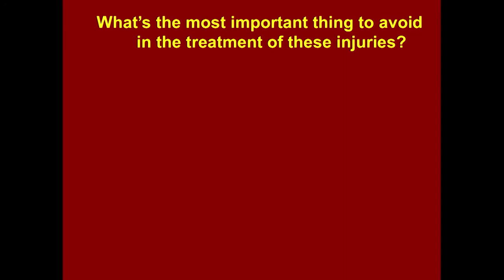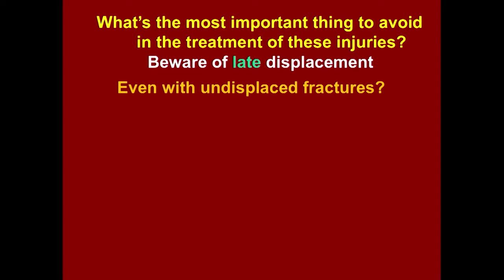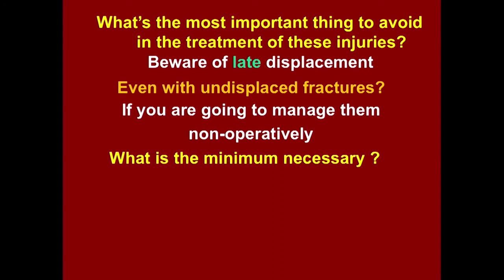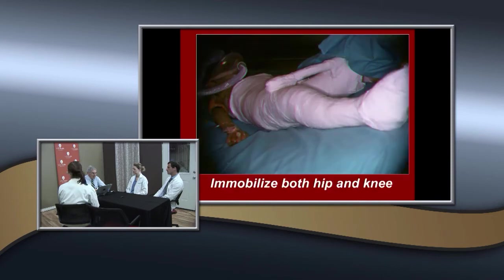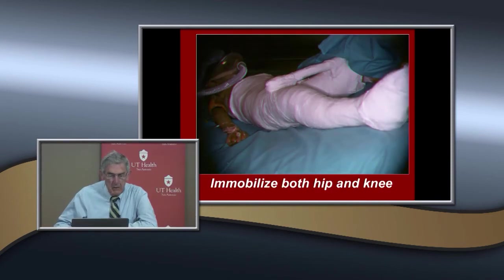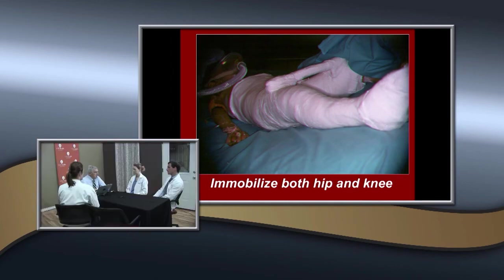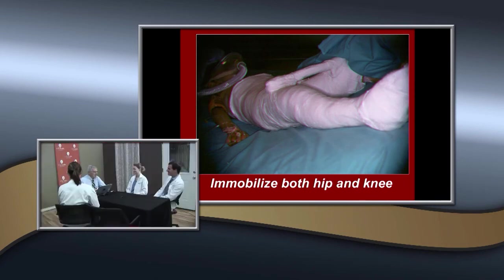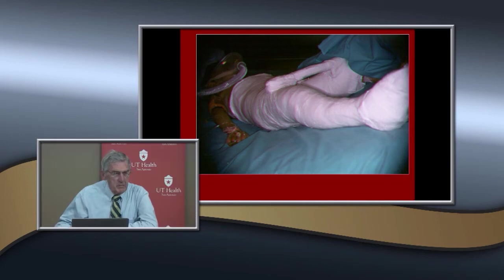What's the most important thing to avoid in treatment? Late displacements — you can get a reduction but it's hard to maintain, even with undisplaced fractures. If managing non-operatively, you must immobilize the joint above and below. These are mostly adolescent injuries — sports injuries in teenagers. Putting a spica cast on a teenager is difficult for the patient and family, so we don't tend to use it.